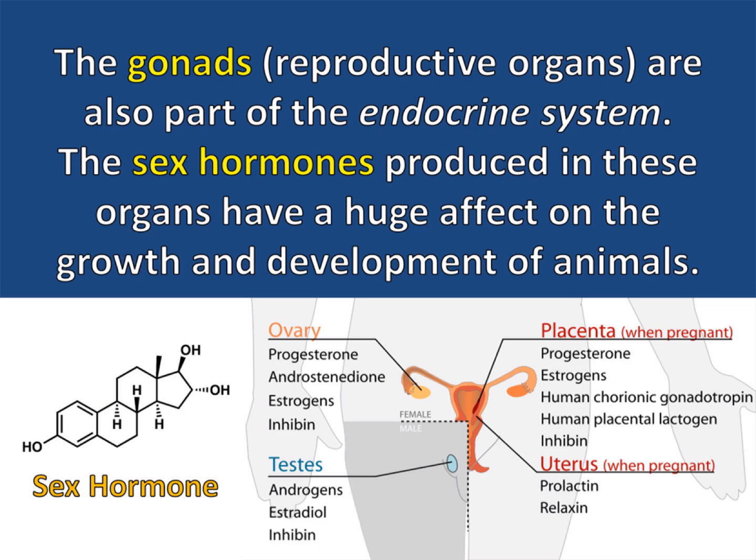The gonads, or reproductive organs, are also a part of the endocrine system. The sex hormones produced in these organs have a huge effect on the growth and development of animals. Testosterone and estrogen are two examples of sex hormones.